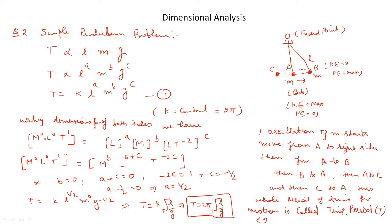T is time period, so it has dimensional formula T^1 (with M^0 · L^0). L is length, represented by L^A. M is mass of the bob, represented by M^B. G is acceleration due to gravity with dimensional formula L·T^(−2), raised to power C. Collecting terms: right side becomes M^B · L^(A+C) · T^(−2C).